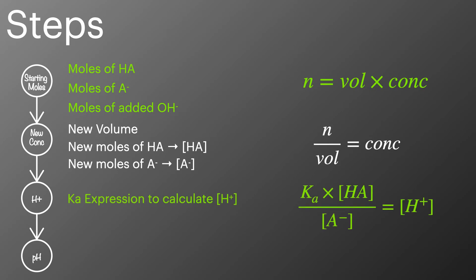In the next step we'll use the values calculated so far to find the value of the concentration of hydrogen ions using the Ka expression. And in the final step we'll calculate the pH from the concentration of hydrogen ions.